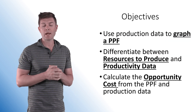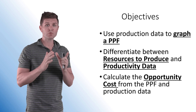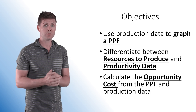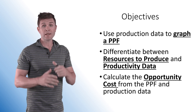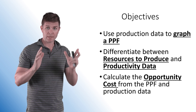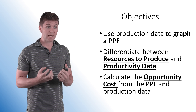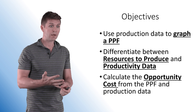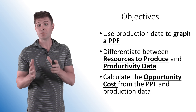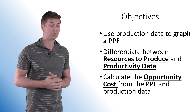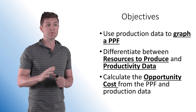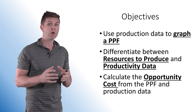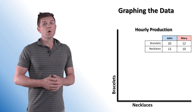Our objectives for today are to use the production data to graph a production possibility frontier, and then to be able to differentiate between data that provides us resources to produce versus productivity data — you need to be able to tell the difference between those two. And finally, we're going to be able to calculate the opportunity cost when given production data.